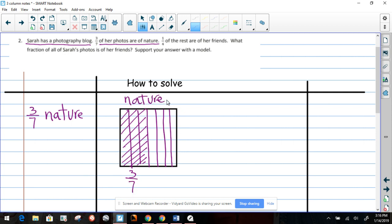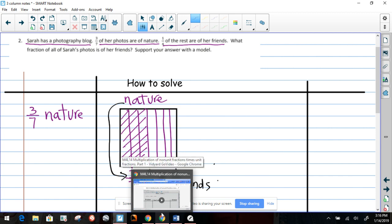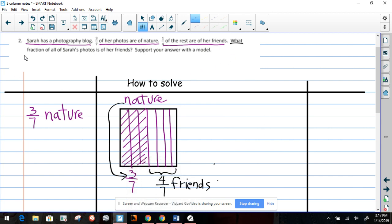Okay, now. The problem says one-fourth of the rest are of her friends. See, if I understand this clearly, what is saying, whatever is left, which is four-sevenths, that is pictures of her friends. Let me label this four-sevenths, these are friends. And you know what, let me label this nature just to make sure I got this correct. So now if you add those up, that will give you a whole number. So that's what we have there. So now the question is, my friends, what fraction of all of Sarah's photos is of her friends?